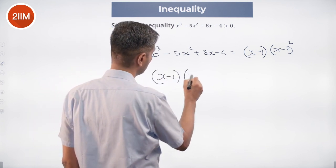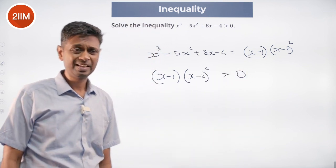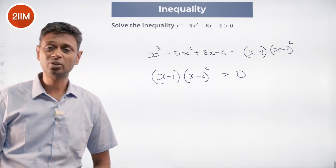(x - 1)(x - 2)² > 0 is what you are looking to solve. (x - 2)² is always positive.